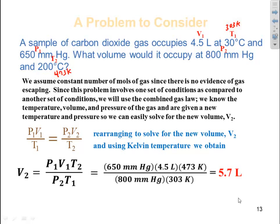Plugging in our values: 650 mmHg for P1, 4.5 liters for V1, 473 Kelvin for T2, 800 mmHg for P2, and 303 Kelvin for T1. We cancel matching units — as long as they're the same they cancel — and temperature must be in Kelvin. We get a final answer of 5.7 liters. Homework 41.